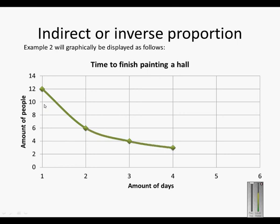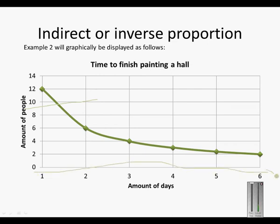So this is the graphic display. The amount of days increases from the left to the right, and the amount of people decreases.